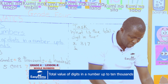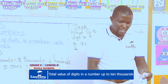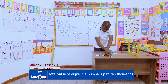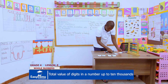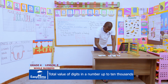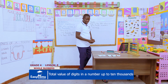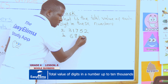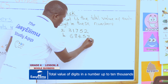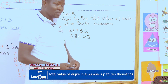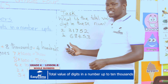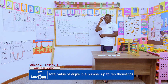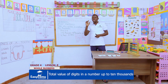We can jumble the digits again and add more number cards. We have formed number 86453. Kindly class, let us look at the total value of each digit in this number. Remember: total value equals the digit multiplied by the amount of its place value.